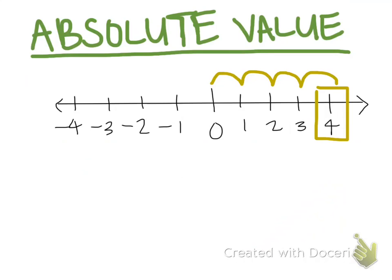The way we write this in math looks like this. These two lines on either side of the four mean absolute value. So when you read this, you'll read the absolute value of four equals or is, and then we would just write four.